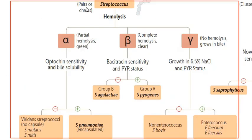Streptococcus exists as pairs or chains, and then we check the reaction with blood. Those who cause partial hemolysis are the alpha group, while those who cause complete hemolysis and form a clear solution are the beta group, and those who cause no hemolysis are the gamma group.